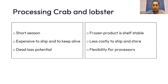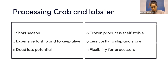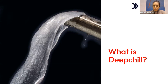Frozen distribution also allows flexibility for processors in terms of planning supply and demand for the year, and for the type of product — whether it's whole cooked, sections, or picked meat. You might be asking why we picked the topic of drip losses and how you can cut them. What we've noticed through the years of working with companies dealing with cooked crab and lobsters is that drip loss is basically a hidden loss of money.